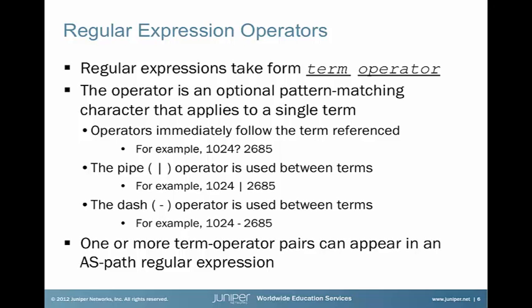Operators immediately follow the term. For example, 1024? 2685 — the question mark means zero or one repetition of 1024. The pipe allows you to do logical ORs between two different values, so it could be from AS1024 or from 2685. The last thing is you can apply a range, for example a range from 1024 through 2685. You can have one or more term and operator pairs in a particular ASPath regular expression.